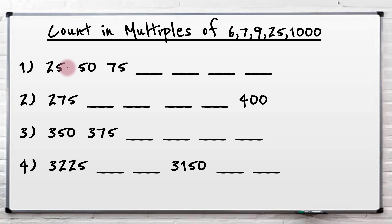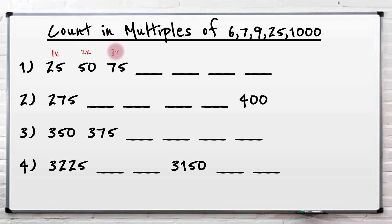Now let's look at counting up in 25's. 25's seem like they're tricky, but they follow a very similar pattern all the way. These are all multiples of 25 - so this is 1 times 25, 2 times 25, 3 times 25, 4, 5, 6, 7, 8. Going up to 4 is really helpful. So it goes 25, 50, 75, and then it goes 100.